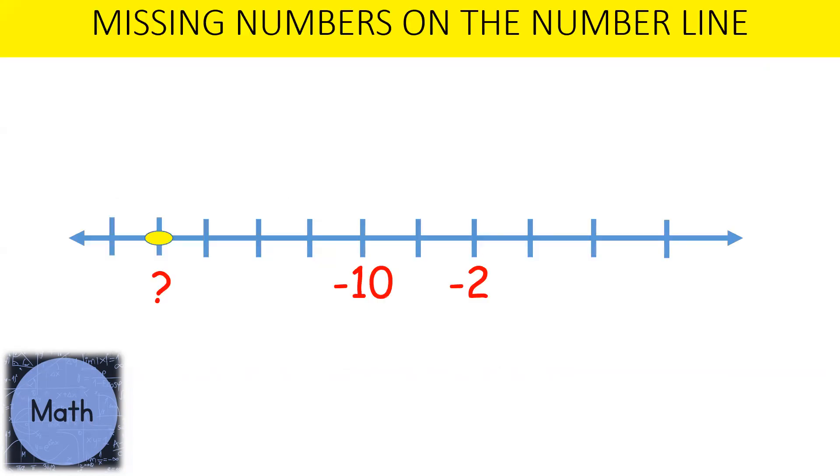For missing numbers on the number line, if you have a look at the example here, you'll see that on the number line we have minus 2. Moving to the left because it's negative, as we move to the left it's minus, and then we need to determine this missing value here on the number line.